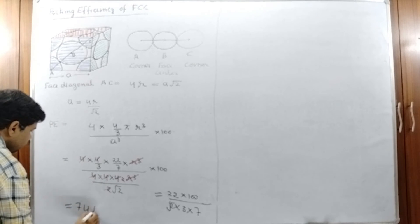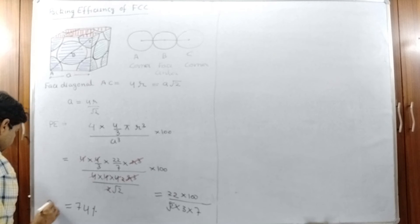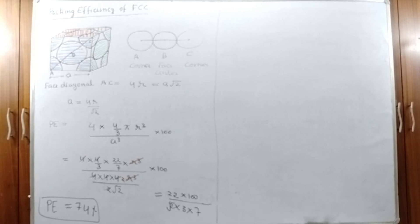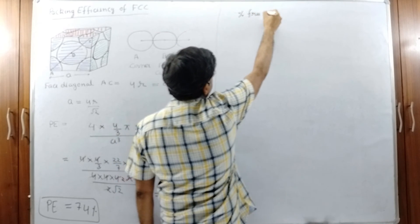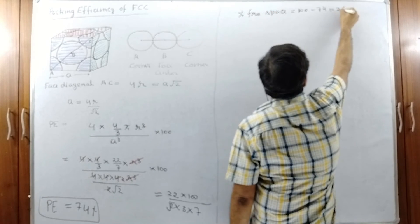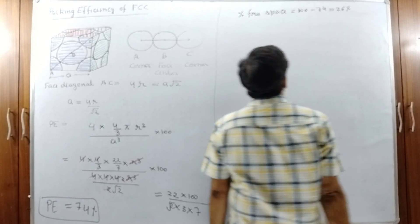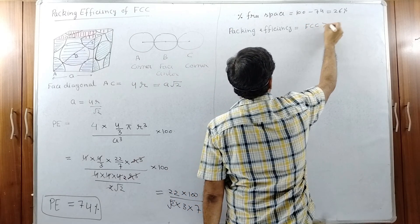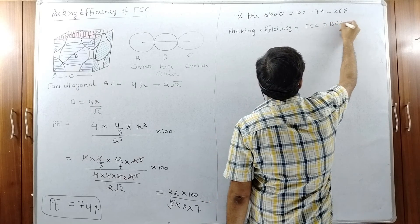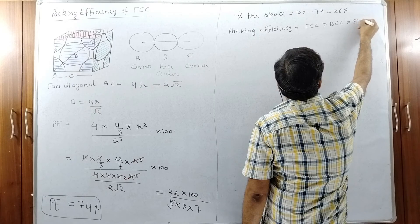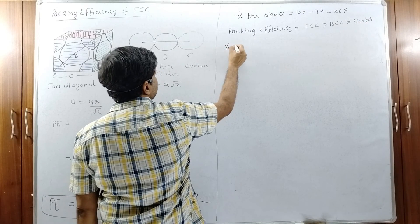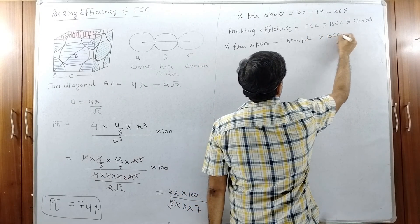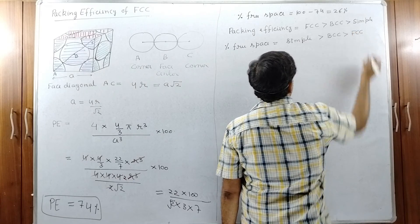This value comes out to 74%. So the packing efficiency of the FCC is 74%, and the percentage free space is 26%. The order of packing efficiency is: FCC at 74% (maximum), then BCC at 68%, then simple unit cell at 52%. The least free space is present in the FCC.